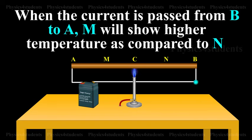When the current is passed from B to A, M will show higher temperature as compared to N.